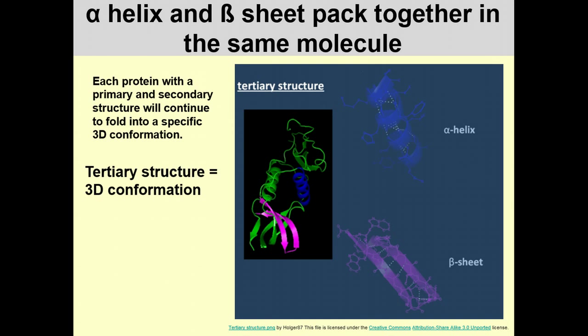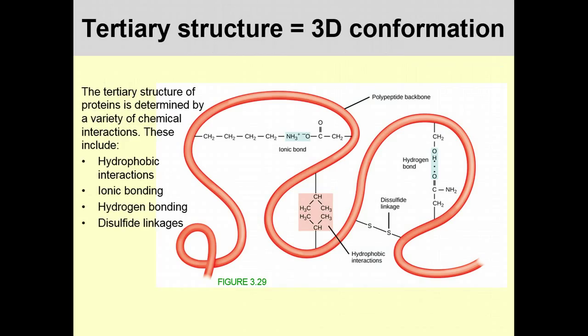When alpha helices and beta sheets pack together in the same molecule, the result is the tertiary structure — the final three-dimensional conformation of the protein. Each protein continues to fold from its primary and secondary structures until it reaches this final form. Tertiary structures are held together by many different types of interactions.